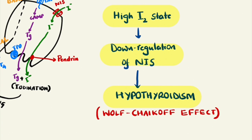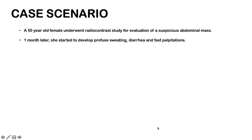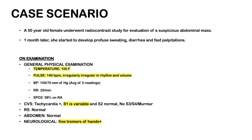Let us see a case scenario to help you understand — this is an imaginary case, not a real one. A 50-year-old female undergoes a radio contrast study for evaluation of a suspicious abdominal mass. One month later, she starts to develop profuse sweating, diarrhea, and fast palpitations. On examination, she has a temperature of 100 degrees Fahrenheit suggestive of fever, pulse of 140 beats per minute irregularly irregular in rhythm and volume — suggestive of atrial fibrillation. BP is 106/70 mmHg, an average of 3 recordings. Respiratory rate is 20 cycles per minute.